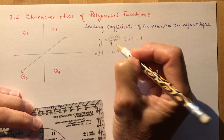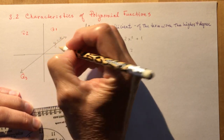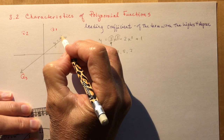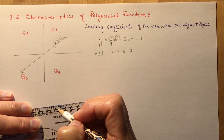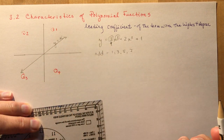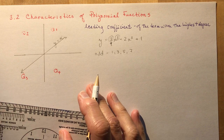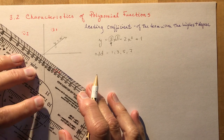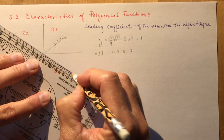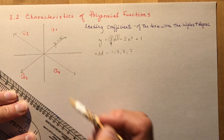So if the degree is odd — for example, y = x, which has a positive leading coefficient of 1 and an odd degree of 1 — it will go from quadrant 3 to quadrant 1. If it had a negative leading coefficient, then it would be going the other way — this would be a negative leading coefficient.